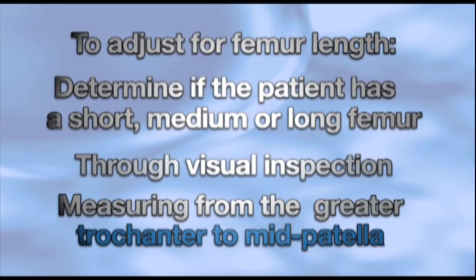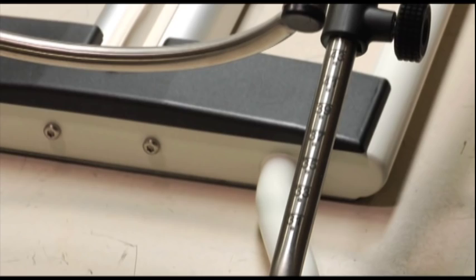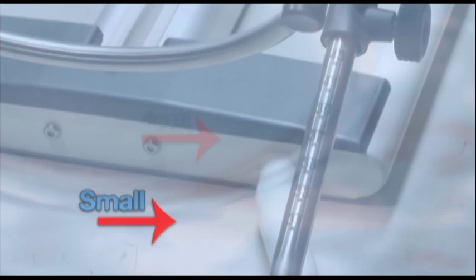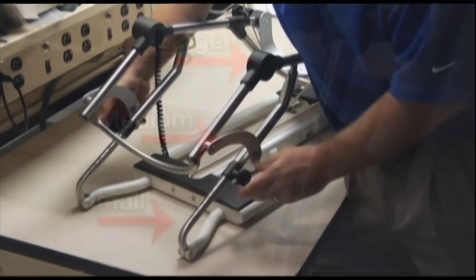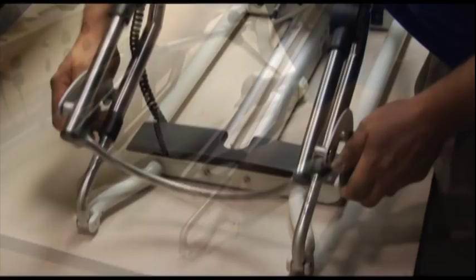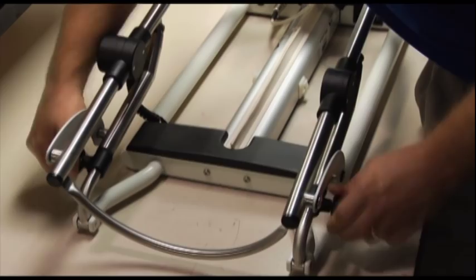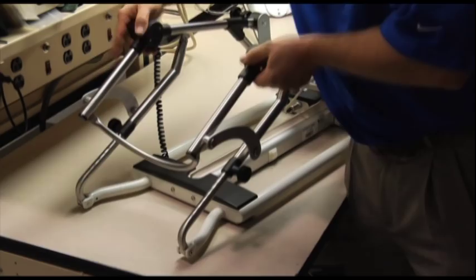Many CPM machines will have a visual scale on the orthosis itself. This scale is usually in centimeters. If no visual scale is present on your CPM machine, adjust the femur length for three settings: small, medium, or large. If your patient has a short leg, adjust the femur length to its shortest setting. Or, if your patient has a longer leg, extend the femur adjustment to its longest setting.